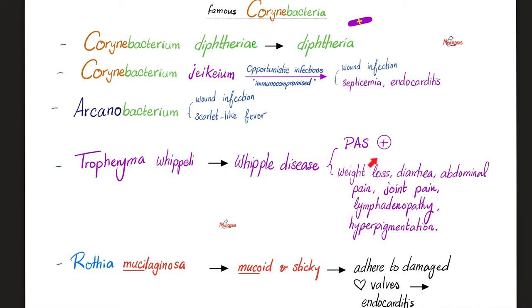Tropheryma whipplei causes Whipple's disease. The organism is PAS-positive — very important — it's a sugar lover. Whipple's disease has the following symptoms: weight loss, diarrhea, abdominal pain, joint pain, lymphadenopathy, and hyperpigmentation of your skin.